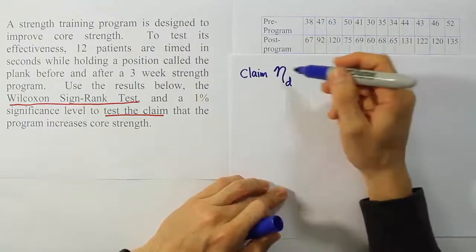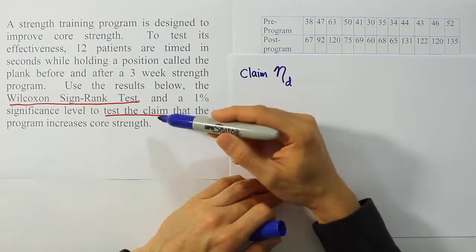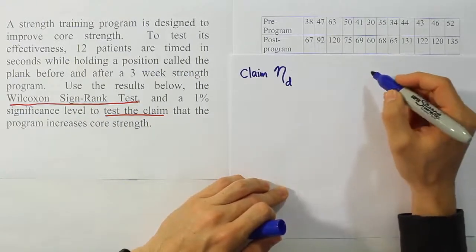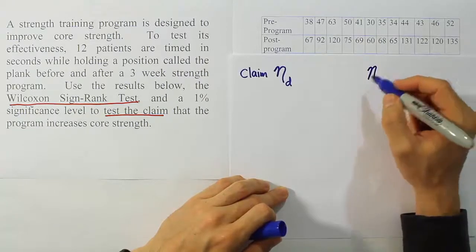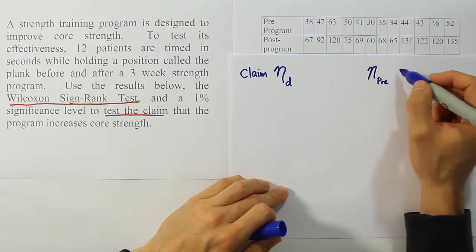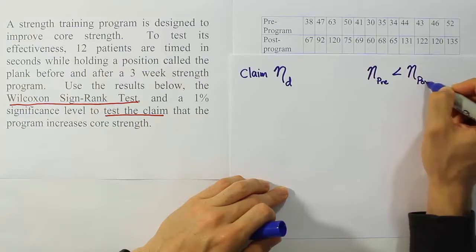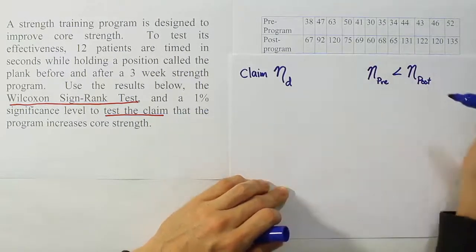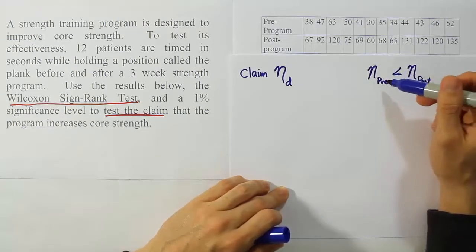So let's think about something real quick. We can do this two ways. I think for most people the simplest way is to think about this idea that the claim says the program increases core strength. So off to the side here, if we write something out, if we say that the median core strength pre-program would be less than the median core strength post the program, according to this statement. Don't you think so? Because it says that it's going to increase core strength. It means after, the median core strength should be greater than the pre-core strength.